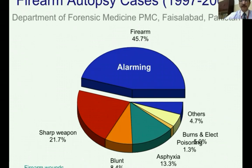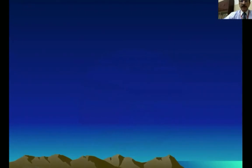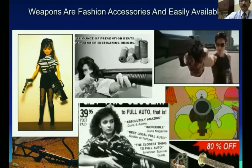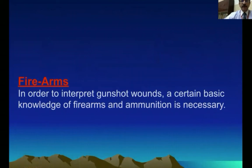This is a large number, and it is partly because from childhood, children are acquainted with the usage of firearm toys, which is playing a big role. The society is acquainted with the usage of such toys from childhood — this is a very alarming situation. That is why we should understand what types of firearms there are, what the mechanics are, what ammunition is used, and how they produce wounds.